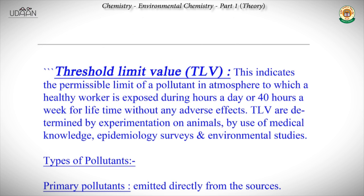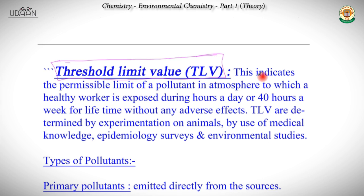One of the most important terms to be remembered in environmental chemistry is Threshold Limit Value (TLV). It indicates the maximum limit of pollution that cannot produce any adverse effects when exposed for 8 hours a day or 40 hours a week for a lifetime. TLV values are determined by experimentation on plants, use of medical knowledge, epidemiology, surveys and environmental studies.